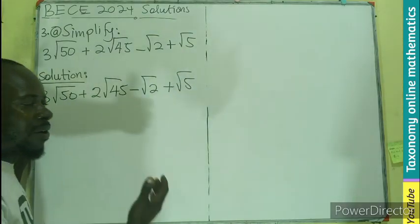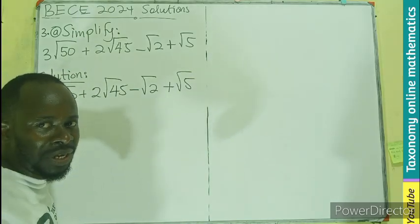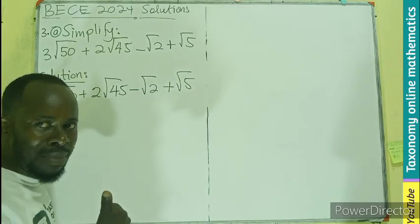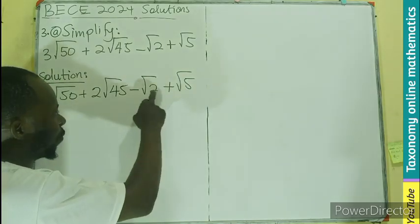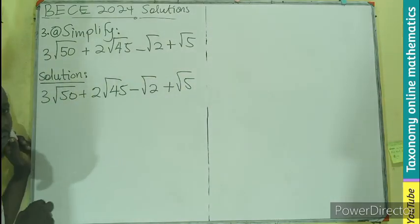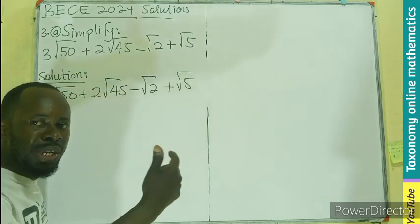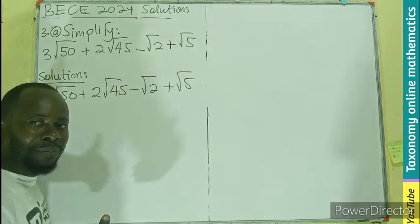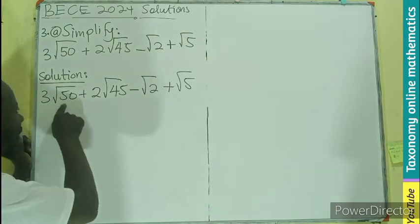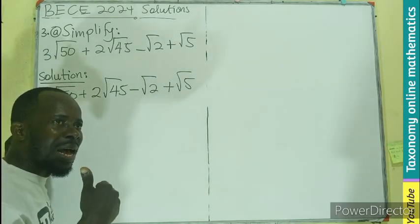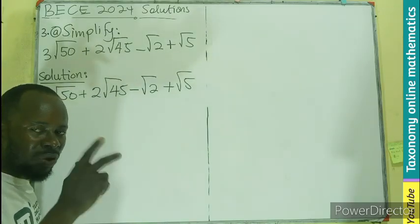In surd arithmetic, we add terms that are like terms — meaning terms that have the same number under the square root. So I have 5, 45, and 50. If you look at 50 and 45, they can be reduced further. So in this case, I need to find a perfect square and a non-perfect square that multiply to give me 50.